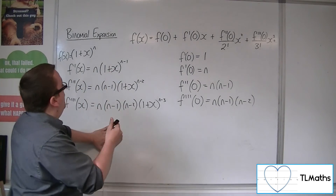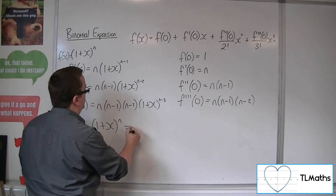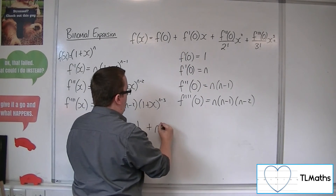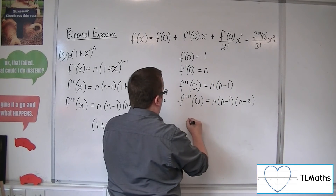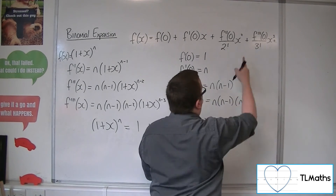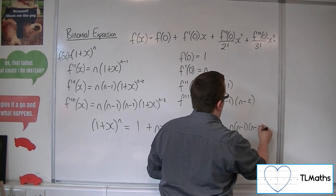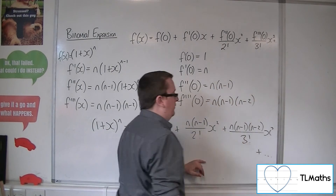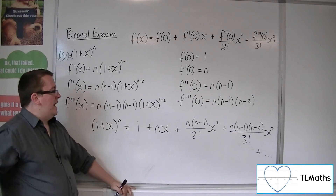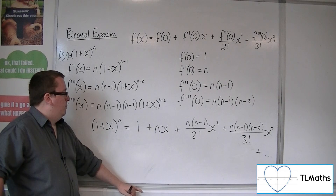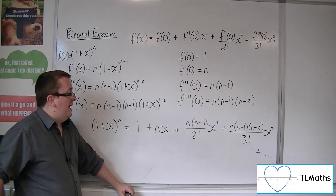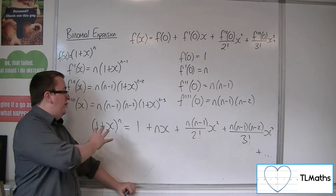Substituting these into our expansion, we can say that (1+x)^n equals f(0) which is 1, plus f′(0) which is n, giving nx, plus n(n−1) over 2 factorial times x squared, plus n(n−1)(n−2) over 3 factorial times x cubed, plus an infinite number of further terms. This is the formula we can now use to expand things like (1+x)^(1/2) or (1−3x)^(−5), writing down an infinite series for these expansions.